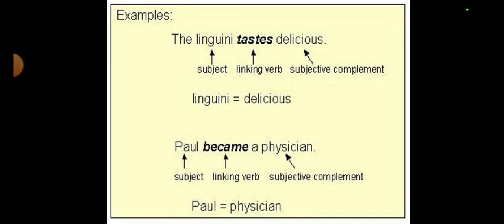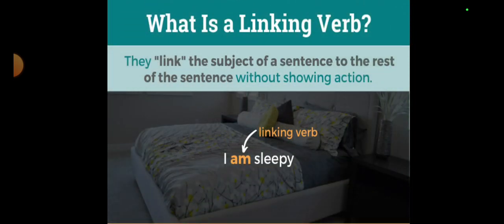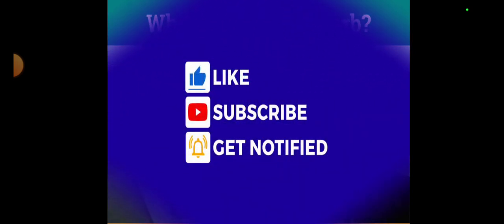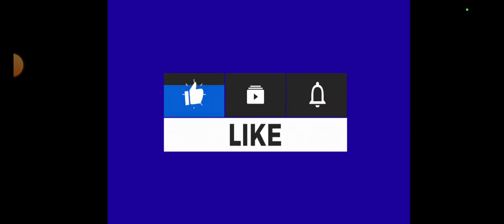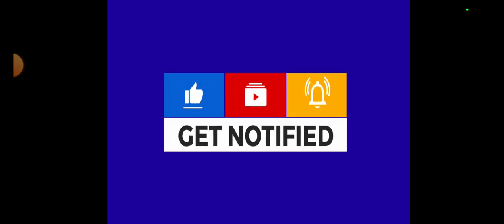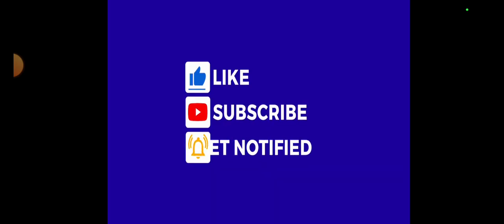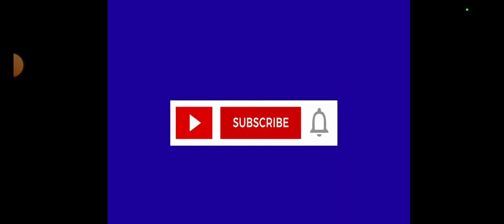'Paul became a physician' — again 'became' is a linking verb. Remember, viewers: linking verbs link the subject of a sentence to the rest of the sentence without showing any action. They link the subject with the complement within the sentence. 'I am sleepy' — 'am' is your linking verb. That is all for today. I hope you are going to like the video and will be able to understand and practice this concept. If you like the video, please comment, and if you are new to the channel, subscribe for more videos. Till the very next lesson, take care of yourself, Allah Hafiz.